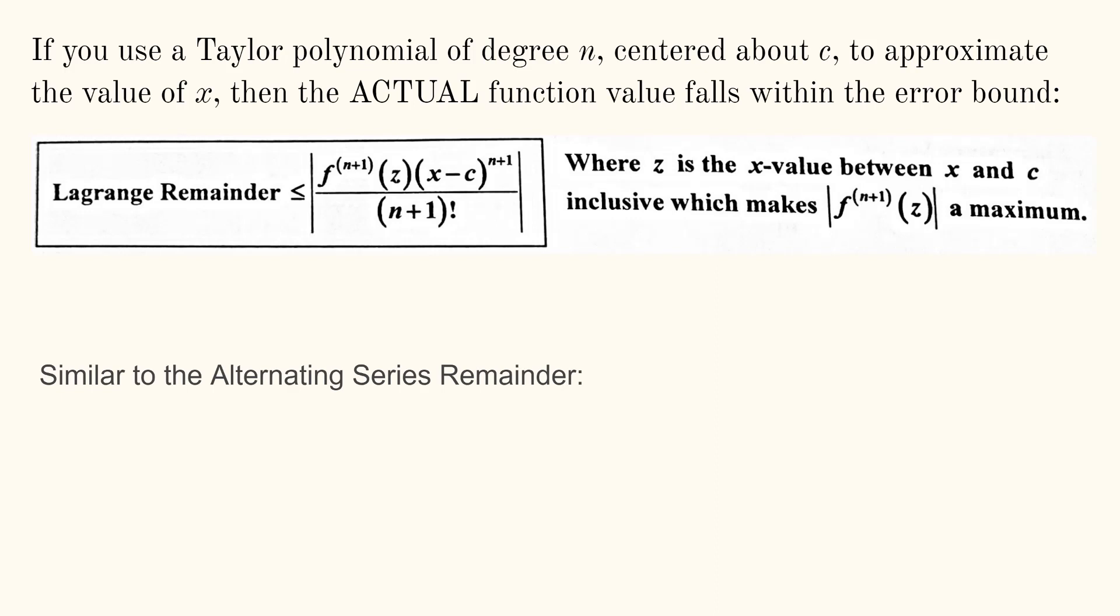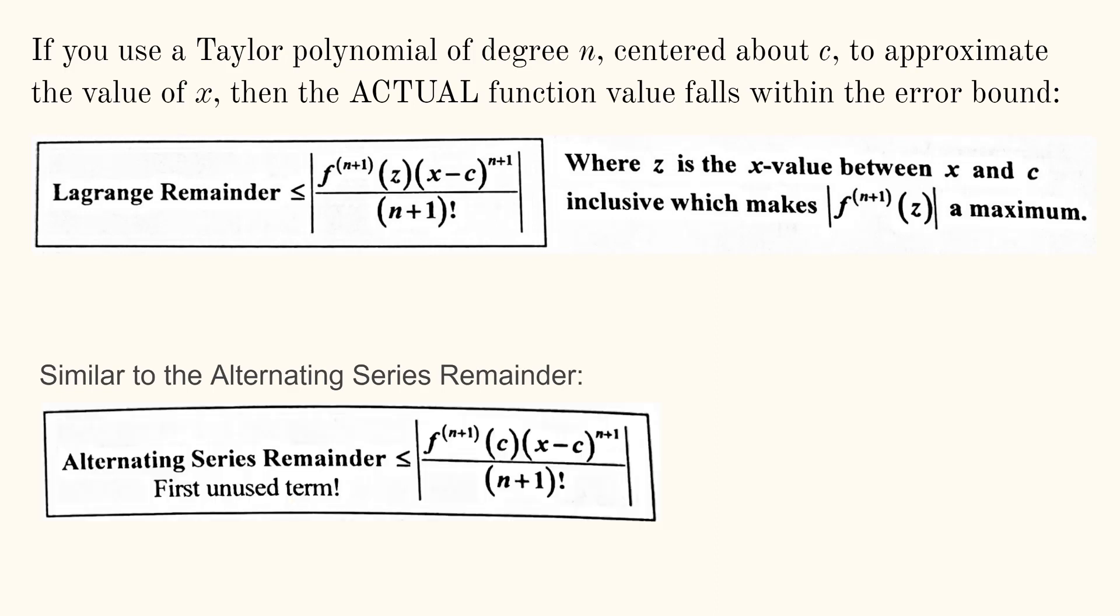This is very similar to the alternating series remainder formula. The only difference is that c is now replaced with z, where z is the x value between x and c inclusive, the n plus 1 derivative of f of z, magnitude of that, a maximum.